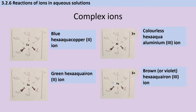Copper is quite straightforward because it generally forms 2+ ions — you'll know from copper sulfate that it's that vibrant blue colour. There are also green hexa aqua iron(II) ions. Then there's a colourless hexa aqua aluminium 3+ ion, and the hexa aqua iron(III) ion, which you'll have met as an orangey-brown rusty colour, though under certain circumstances it can also appear as a pale lilac-violet colour.